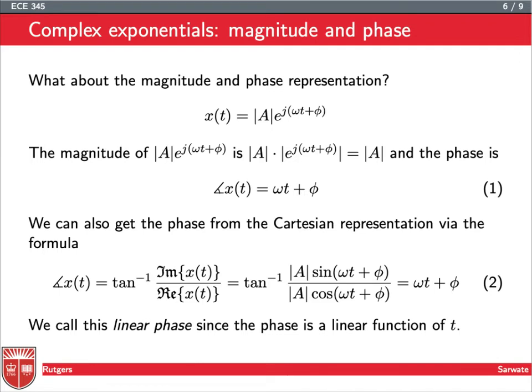And the phase is just what's upstairs multiplying j in the e to the j term, so that's just omega t plus phi. You can get this also from this tan inverse formula that I showed before. The imaginary part is a sine, the real part is a cosine, so imaginary over real is a tangent function, and these constants are going to cancel, and so we just get tan inverse of tan omega t plus phi, so you get omega t plus phi.